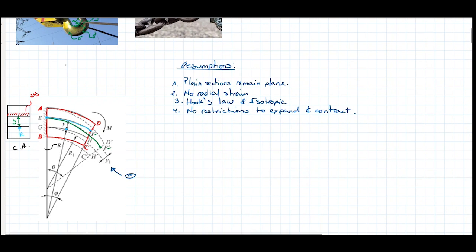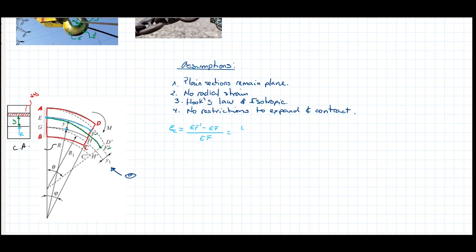The circumferential strain: by definition of strain, if I know that the circumferential length of that fiber changed, it's going to be the deformed circumferential length minus the undeformed circumferential length, divided by the original one. Rearranging, this is EF prime divided by EF, minus one.